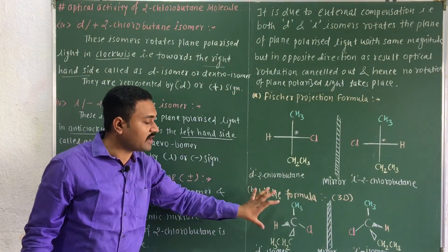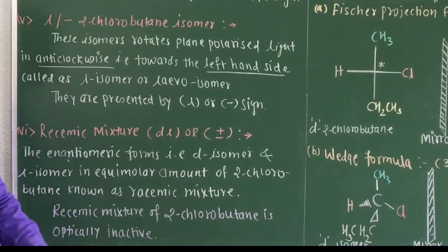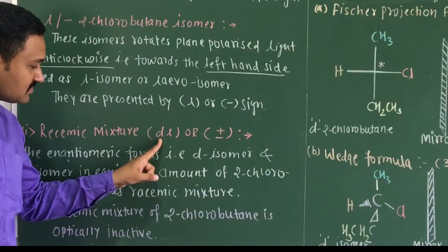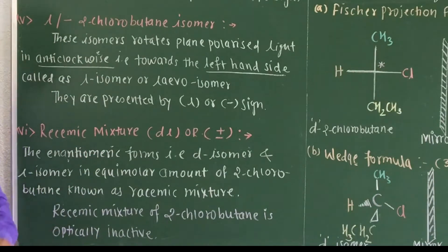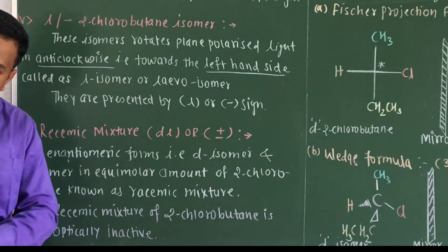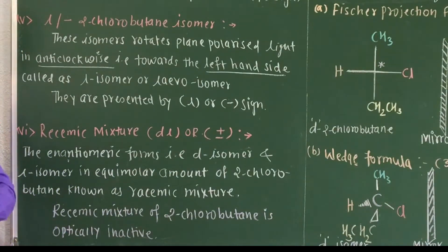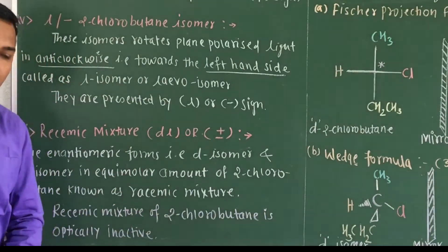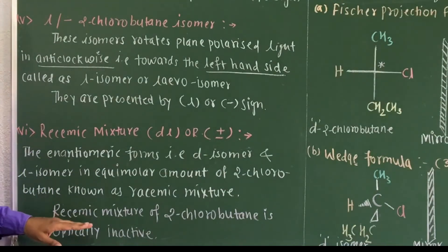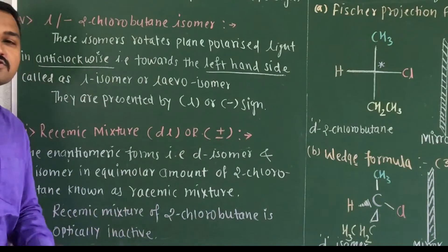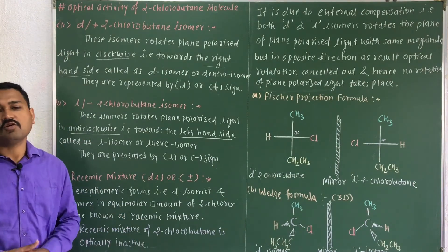The racemic mixture is represented by 'dl' or '±' sign. It is a mixture of the D form and L form of 2-chlorobutane present in equimolar amounts. This racemic mixture of 2-chlorobutane is optically inactive because the two forms are present in equal amounts.